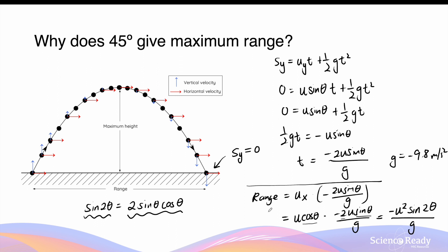This expression tells us that the range of the object depends on three variables: the initial velocity, the launch angle, and it is also inversely proportional to the gravitational acceleration g. For a given g and initial velocity, sin2θ gives a maximum range when 2θ equals 90 degrees, because sin90° equals 1, its maximum value. Therefore, θ equals 45 degrees — this is the reason why a launch angle of 45 degrees always gives the maximum range for a given initial velocity and gravitational acceleration.